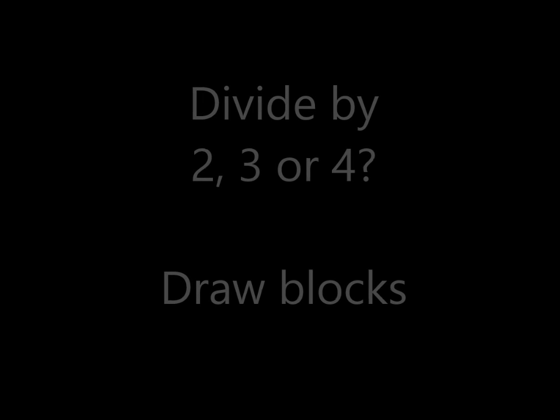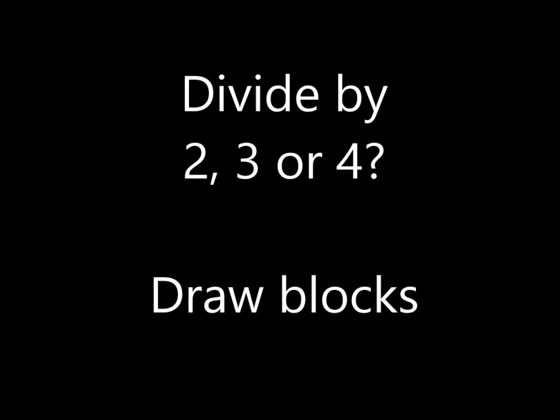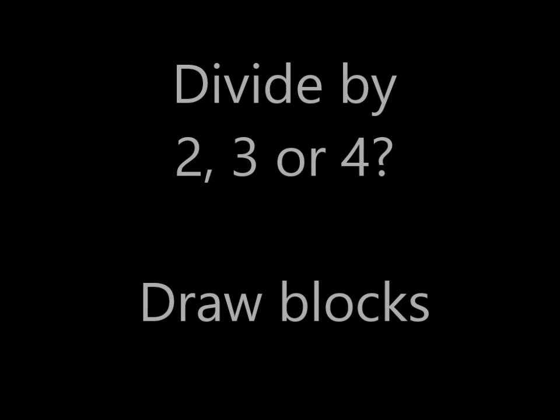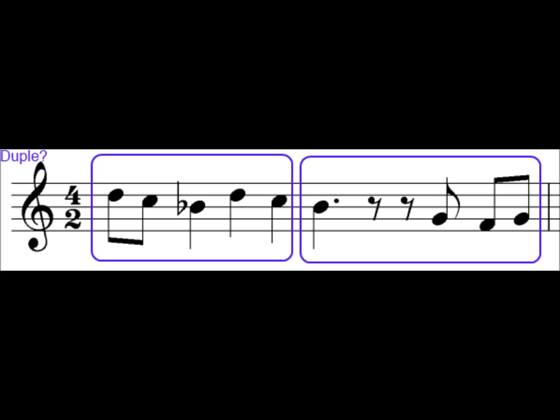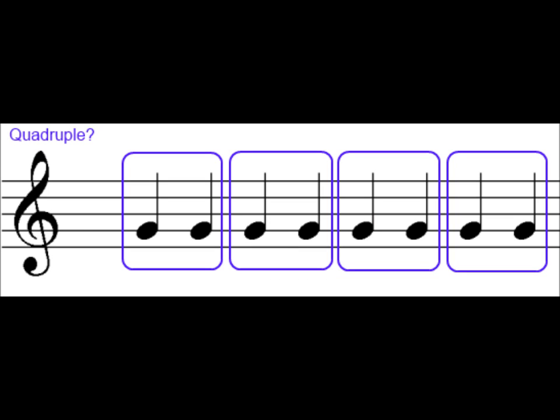So we take the number eight and we try to divide it by two, three or four to work out whether it's duple, triple or quadruple time. The easiest way to do this is just to try and draw blocks around the notes in the bar. So with eight crotchet beats we can easily divide them up into two equal sized blocks for duple time. If we try and do the same with three equal blocks we get into a bit of a pickle because we can't divide eight by three and get a whole number. And finally for quadruple time again it's easy to divide up eight crotchet beats into four equal blocks.